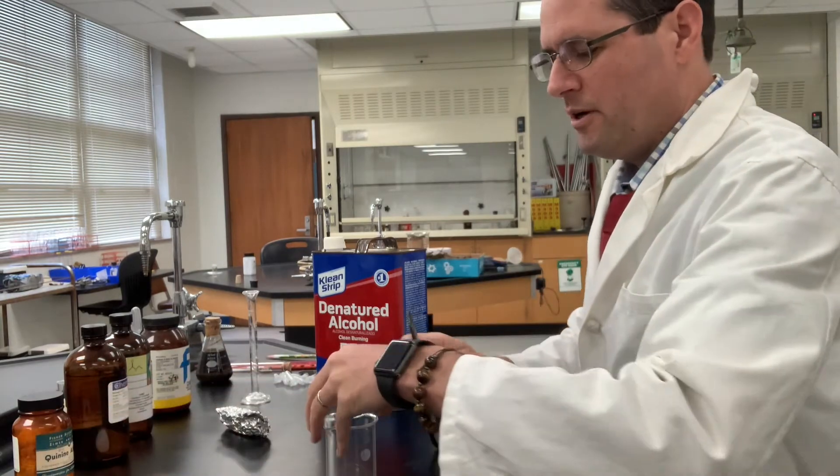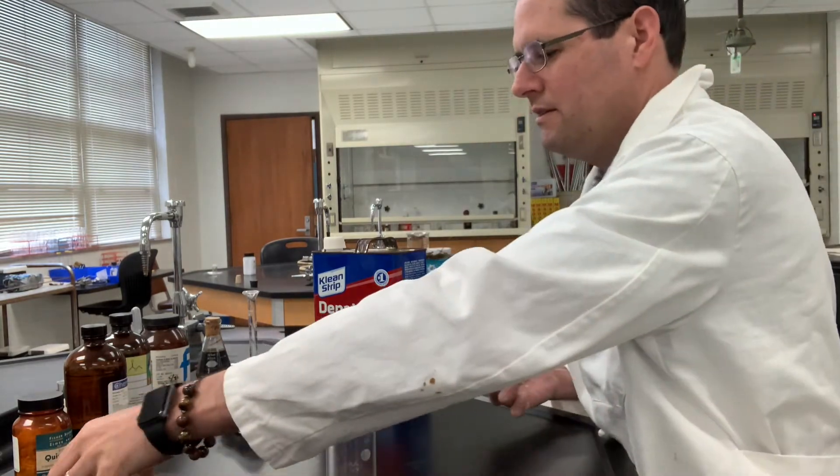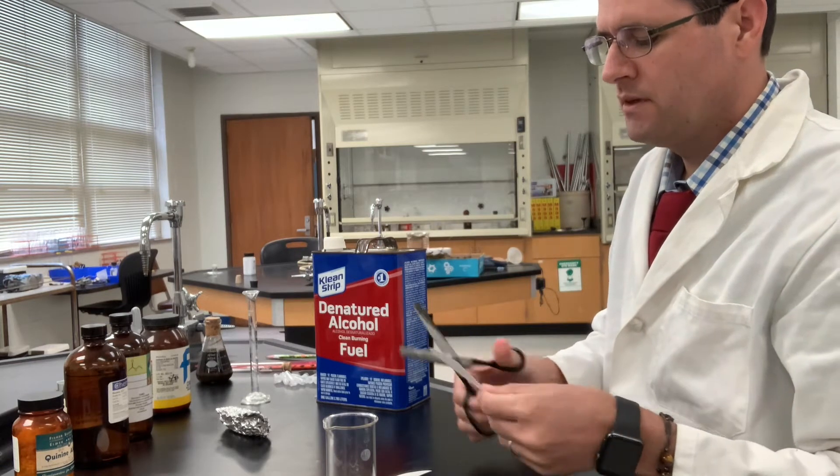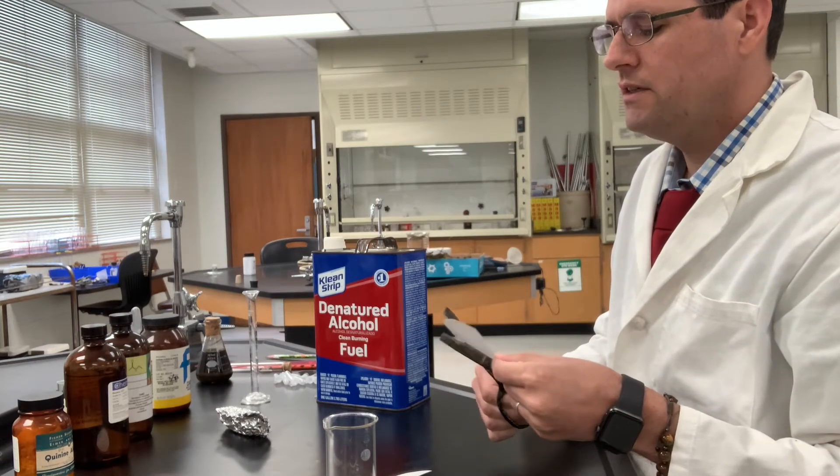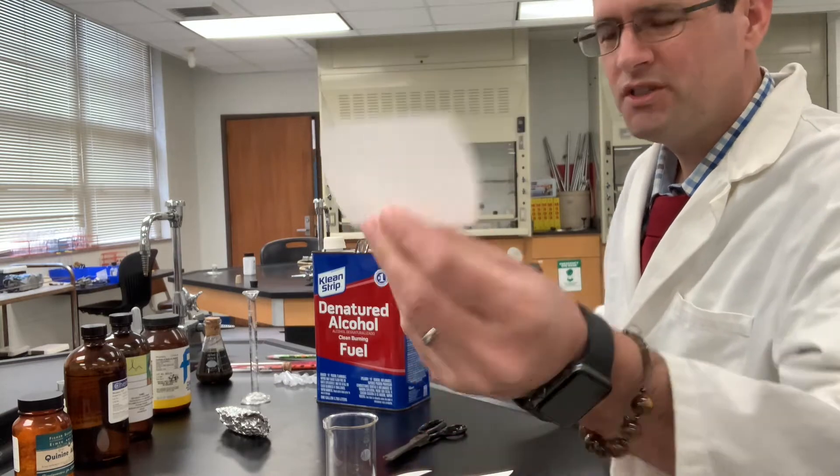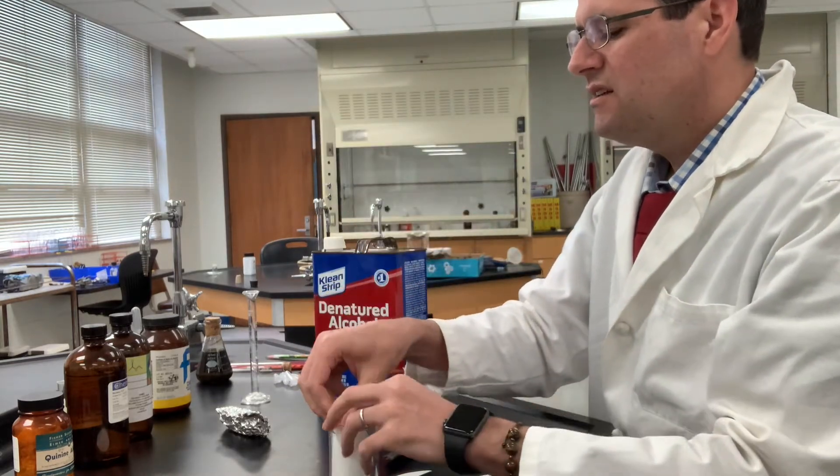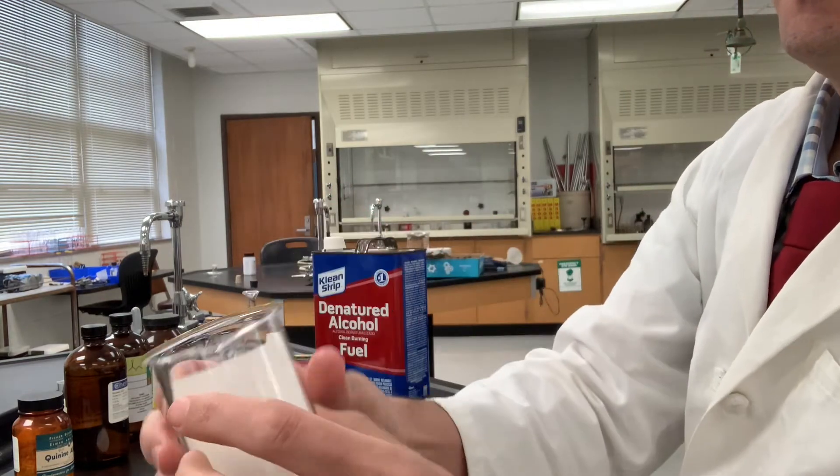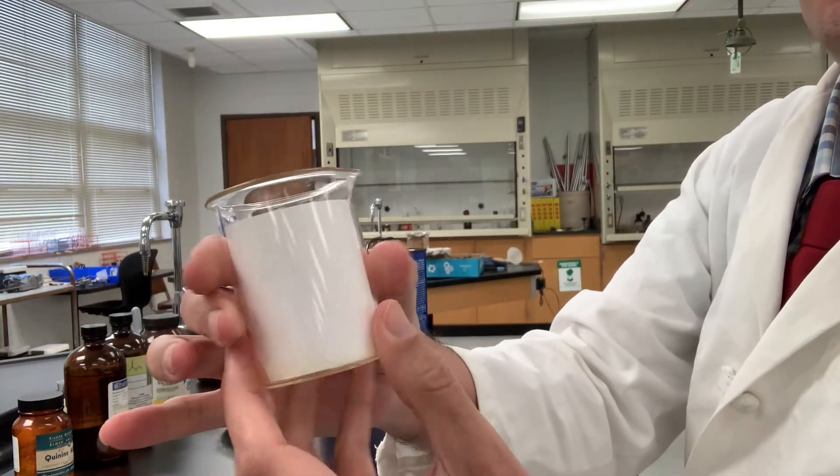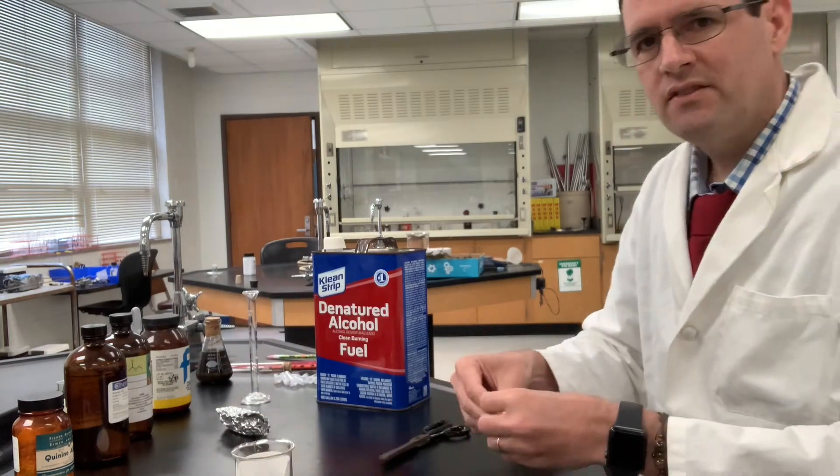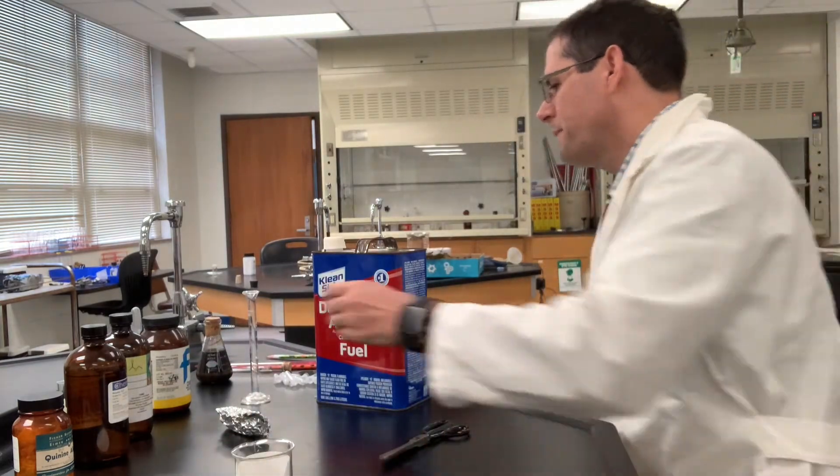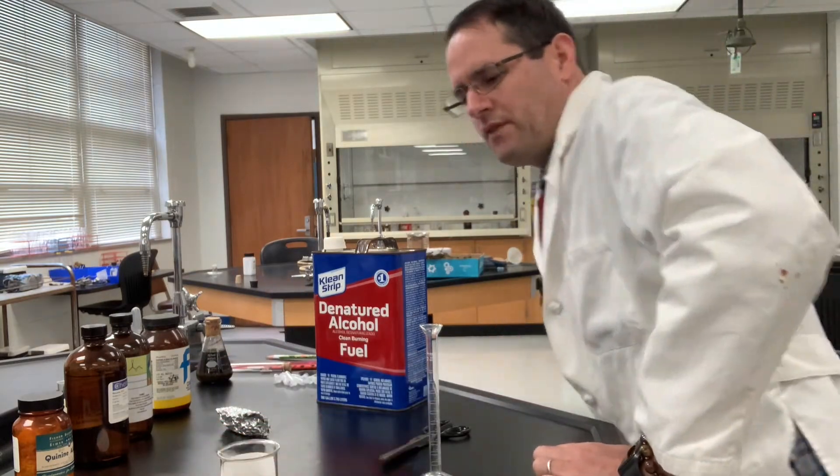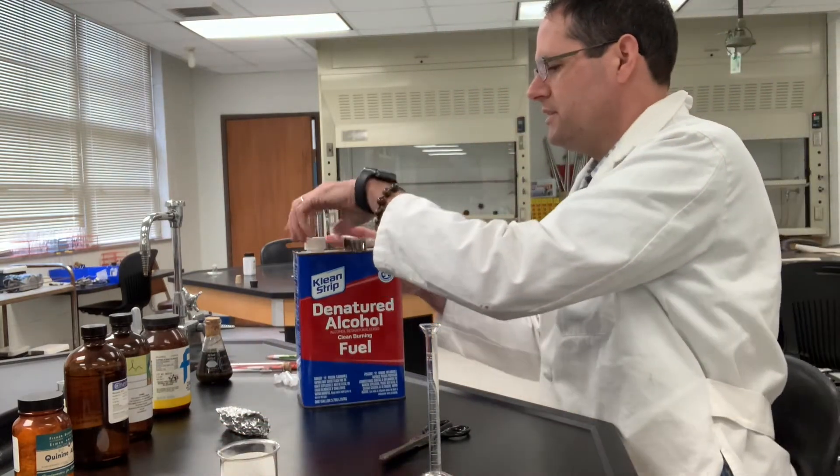First, we want to prepare our developing chamber here. Grab a piece of filter paper and snip off portions there so it makes a nice little curve around the glassware like so. The purpose of that is to saturate the air in there with vapors of the solvent so it doesn't evaporate off your TLC plate.